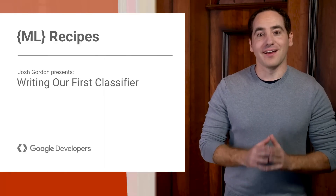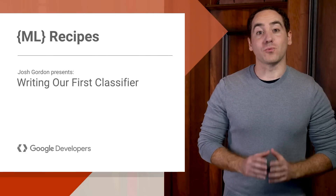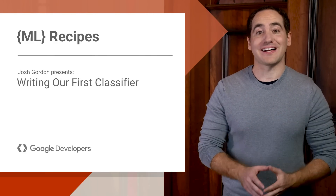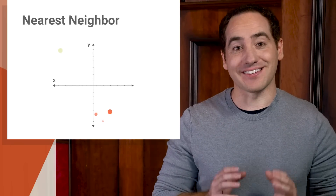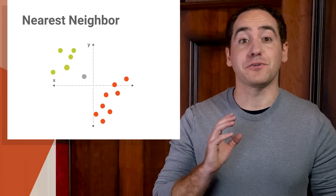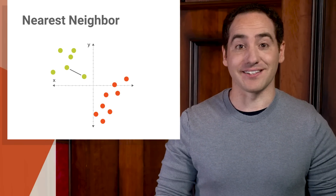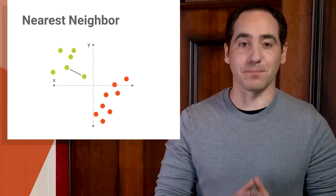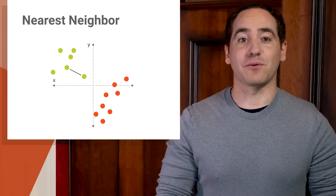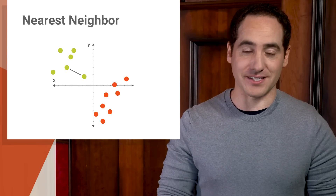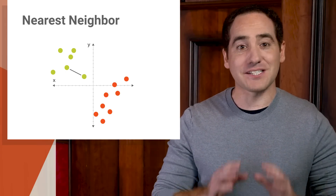Hey everyone, welcome back. In this episode, we're going to do something special, and that's write our own classifier from scratch. If you're new to machine learning, this is a big milestone, because if you can follow along and do this on your own, it means you understand an important piece of the puzzle. The classifier we're going to write today is a scrappy version of K Nearest Neighbors — that's one of the simplest classifiers around.